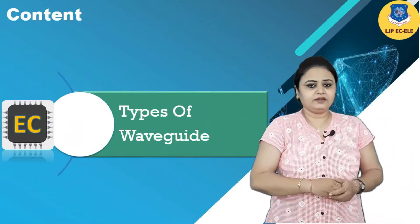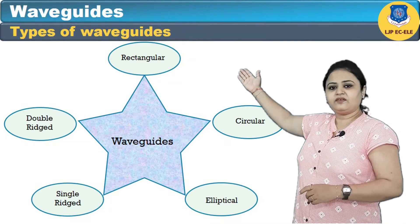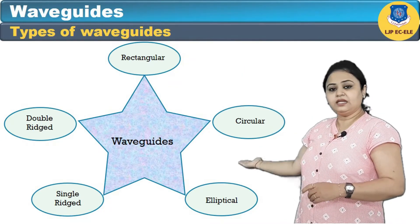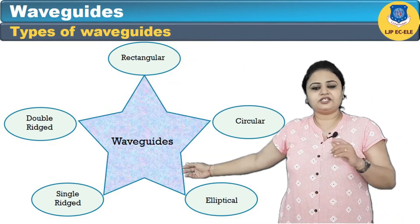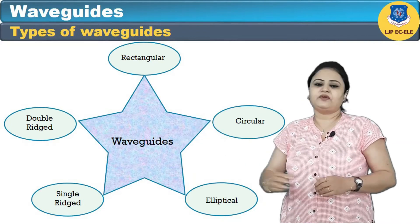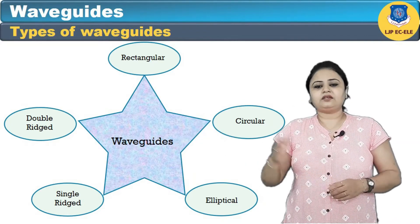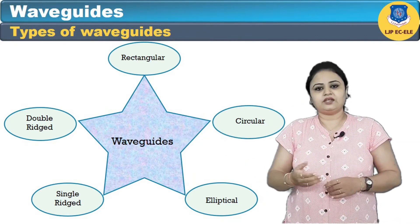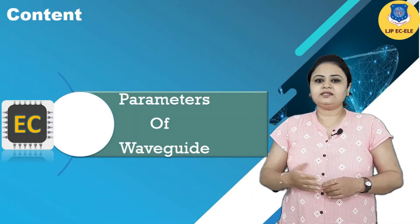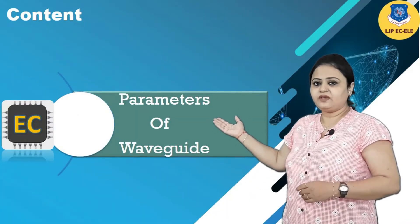Now let us see the different types of waveguide: rectangular waveguide, circular waveguide, elliptical waveguide, single ridged waveguide, and double ridged waveguide. However, most commonly rectangular and circular waveguides are used.